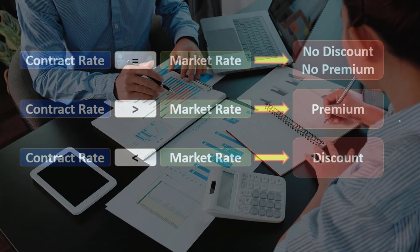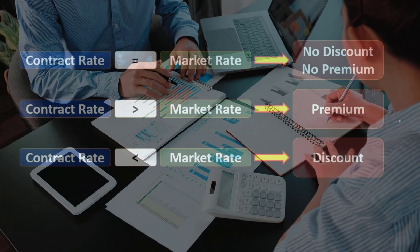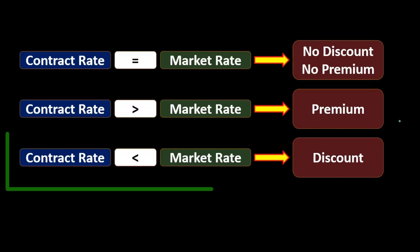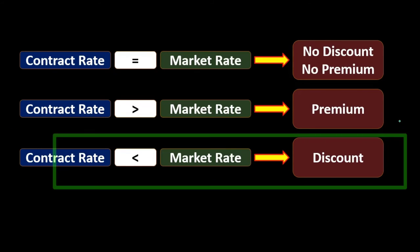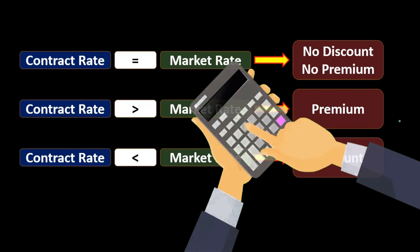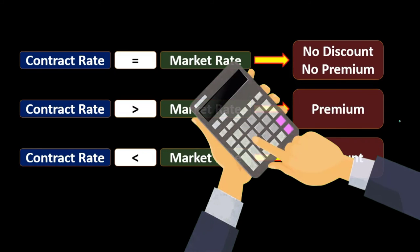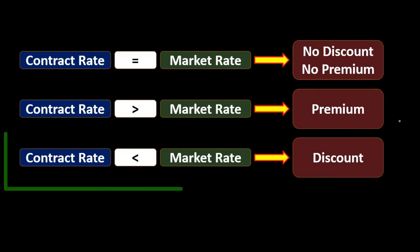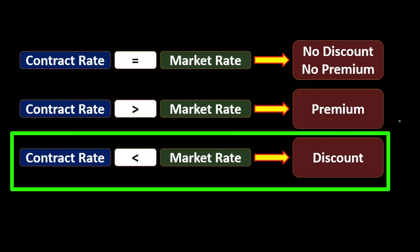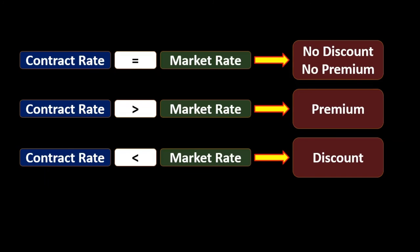When we deal with these premiums and discounts in the future, they're going to have to go away as the bond is paid off. They relate to interest, meaning we'll be reducing the premium or discount and recording it to the income statement account of interest income as the bond moves through the process towards maturity and as interest payments are made.